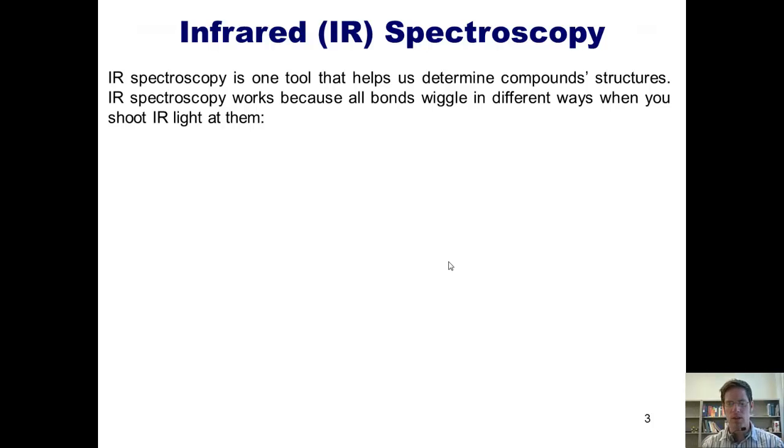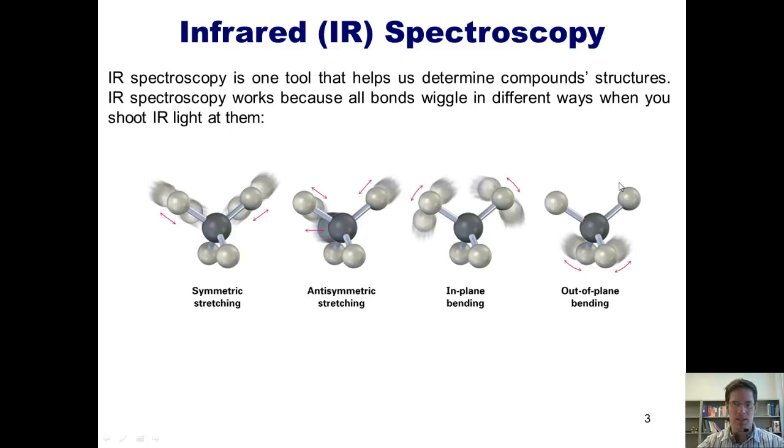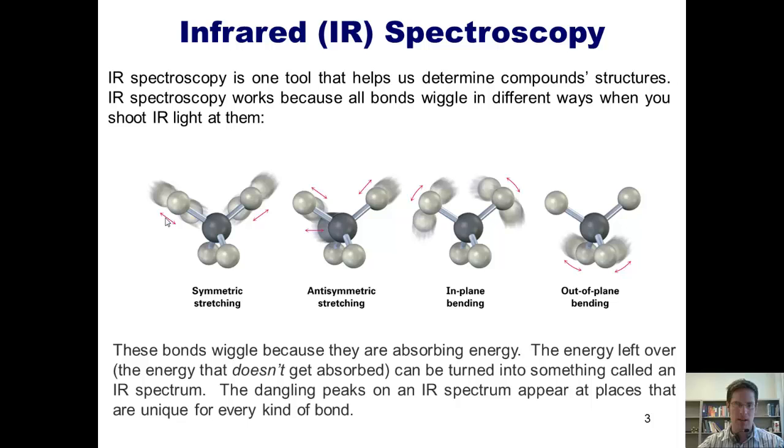IR spectroscopy is one tool that helps us determine compound structures. It works because all bonds wiggle in different ways when you shoot IR light at them. If I take molecules that look like this, I fire energy in the form of light at them, specifically infrared light, and they begin to move. As these bonds wiggle, they do it because they're absorbing energy from the light. The infrared energy that's left over, that doesn't get absorbed, passes through the molecule and is detected and converted into something called an IR spectrum. The dangling peaks in an IR spectrum appear at places that are different and unique for each kind of bond.